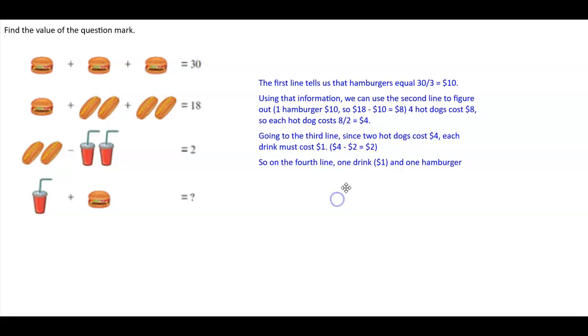Now on the fourth line, that means that one drink is $1 and one hamburger is $10, which means it would cost $11. So therefore the value of the question mark is $11.